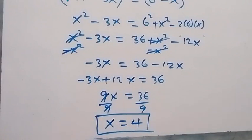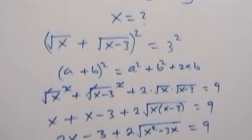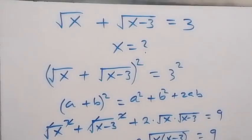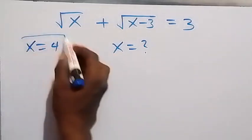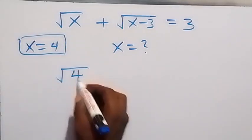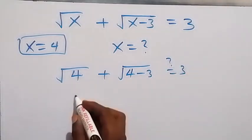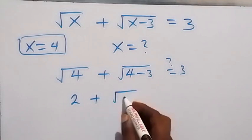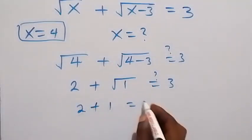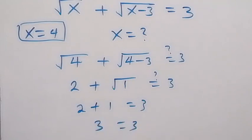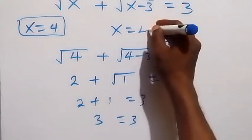The value of x equals 4. Let's check if this satisfies the original equation: root x plus root x minus 3 equals 3. Substituting x equals 4, we get root 4 plus root of 4 minus 3, which is root 4 plus root 1. Root 4 is 2 and root 1 is 1, so 2 plus 1 equals 3. The left-hand side equals the right-hand side, therefore x equals 4 satisfies the equation.